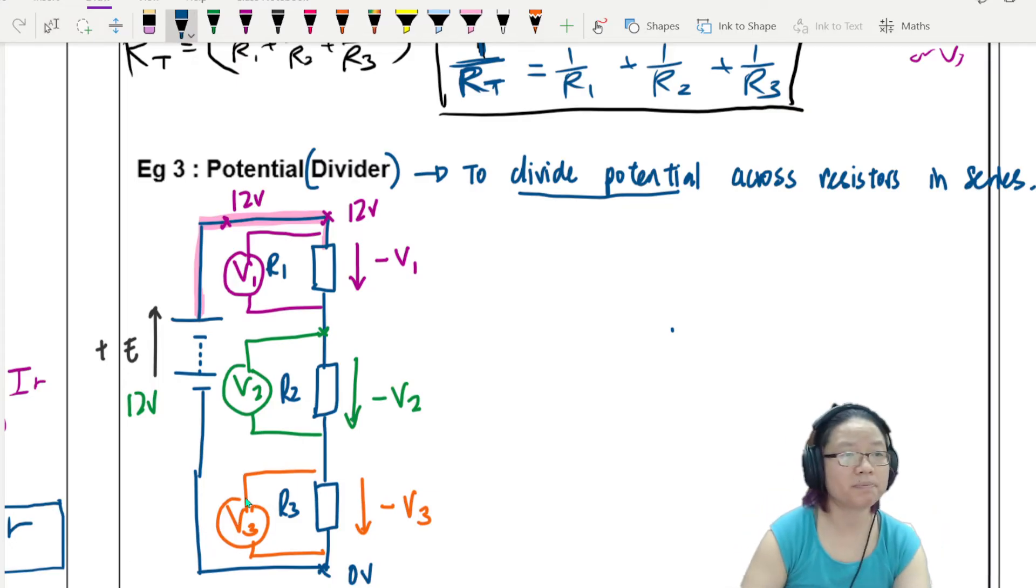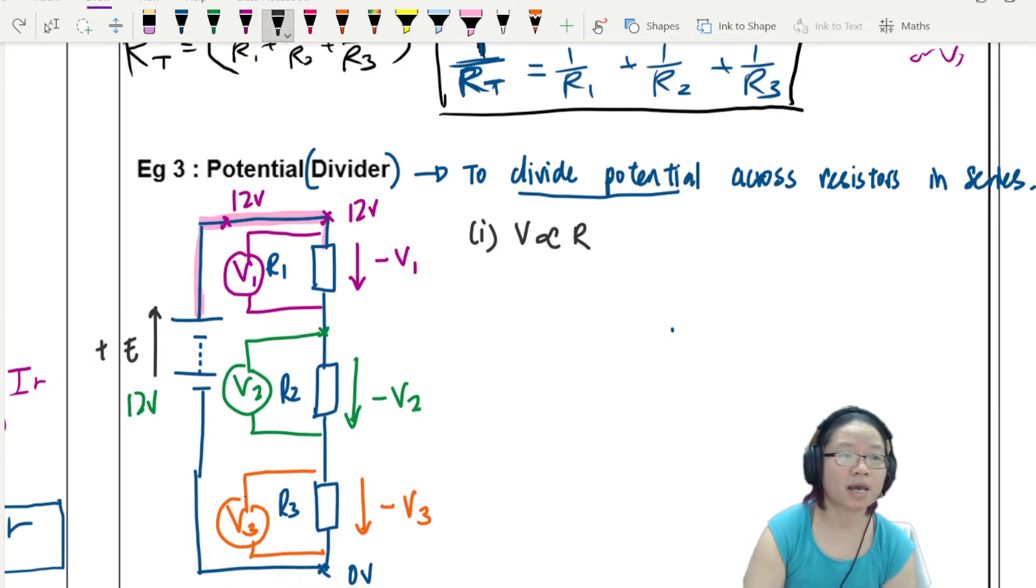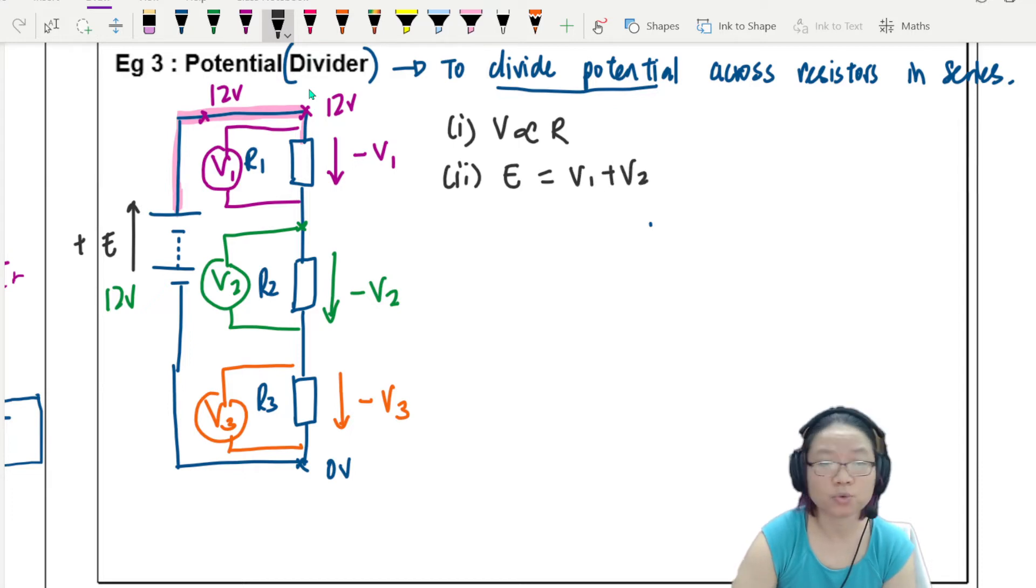You can refer to the examples that we will record or that's inside the playlist. But the whole idea about this potential divider is that, number one, the value of V is proportional to the resistance. Because they all have the same current. It is the same loop. So they all have the same current. Whatever current that flows through R1 will flow through R2 will flow through R3 and then go back. So same current. That's why V is proportional to R. And because of this, we can use ratio to actually find the value of V1, V2, or V3. The second thing to take note about is the E, because of conservation energy, is actually equal to V1 plus V2 plus V3.